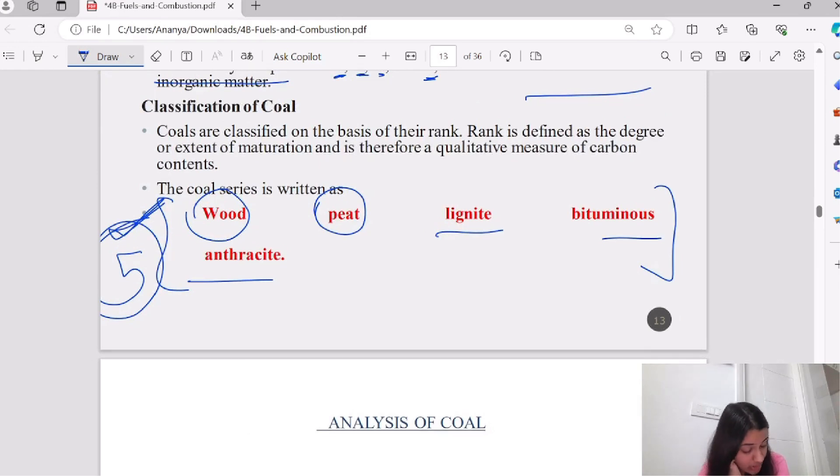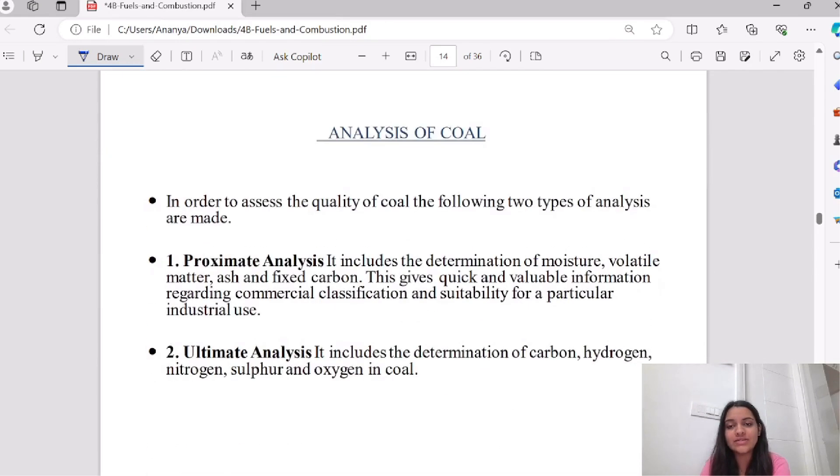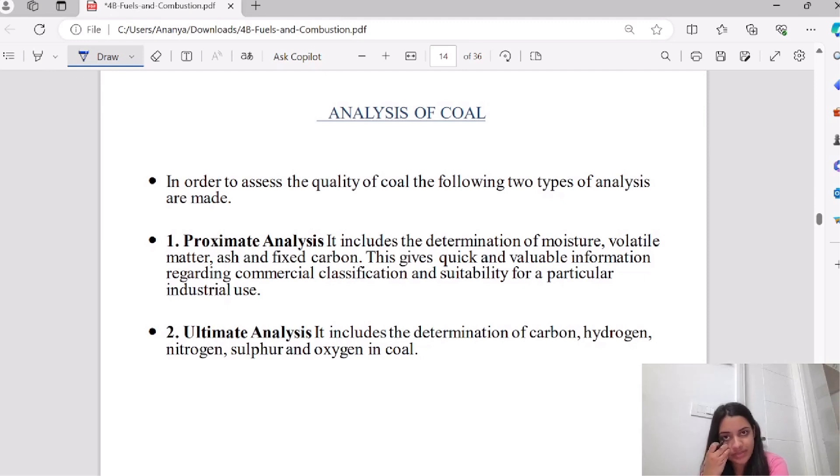The carbon content and calorific value is increased, and the rank or degree is shown. Next is analysis of coal. The analysis of coal is a question from the paper: proximate analysis and ultimate analysis.